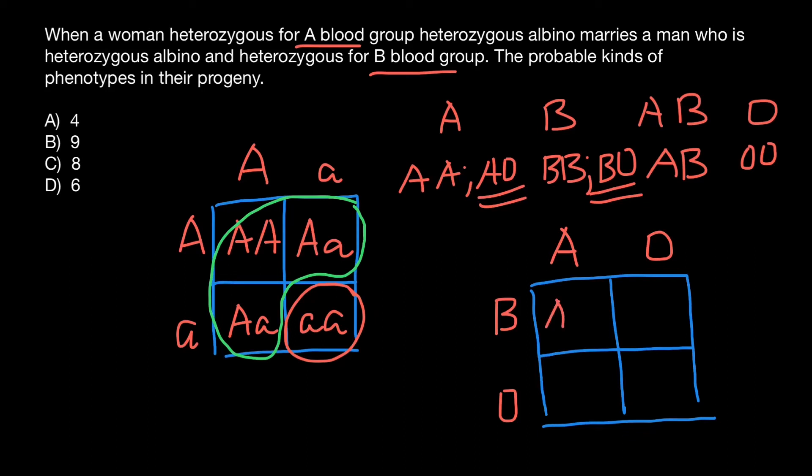Let's take a look at what kind of phenotypes are probable in their progeny. Blood group AB, blood group B, blood group A, and blood group O. So the total number would be four different blood groups in the progeny, or four phenotypes.